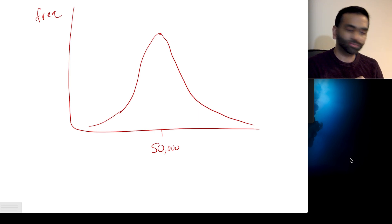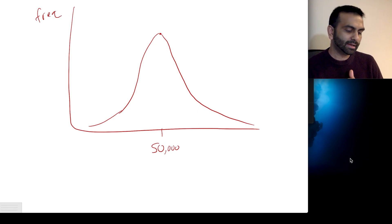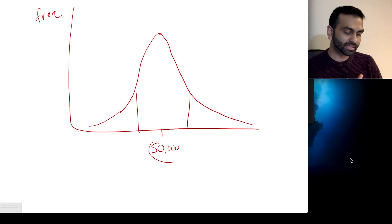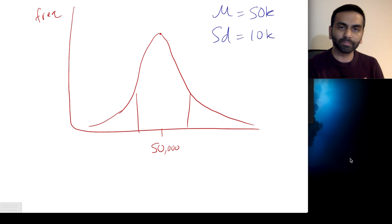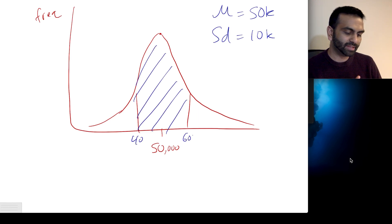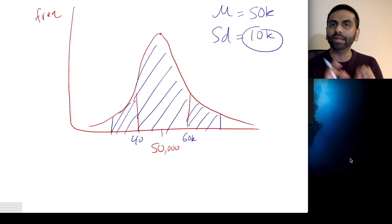A normal distribution is not only one where the mean is most common, but also it's symmetric — it goes an equal amount on the left and the right, it's not skewed. Further, there's a very specific distribution where exactly 68% of all values are within one standard deviation. So if the mean income is $50,000 and the standard deviation is $10,000, then 68% of people have an income between $40,000 and $60,000, and 95% are within two standard deviations — meaning within $20,000 — capturing 95% of all incomes.